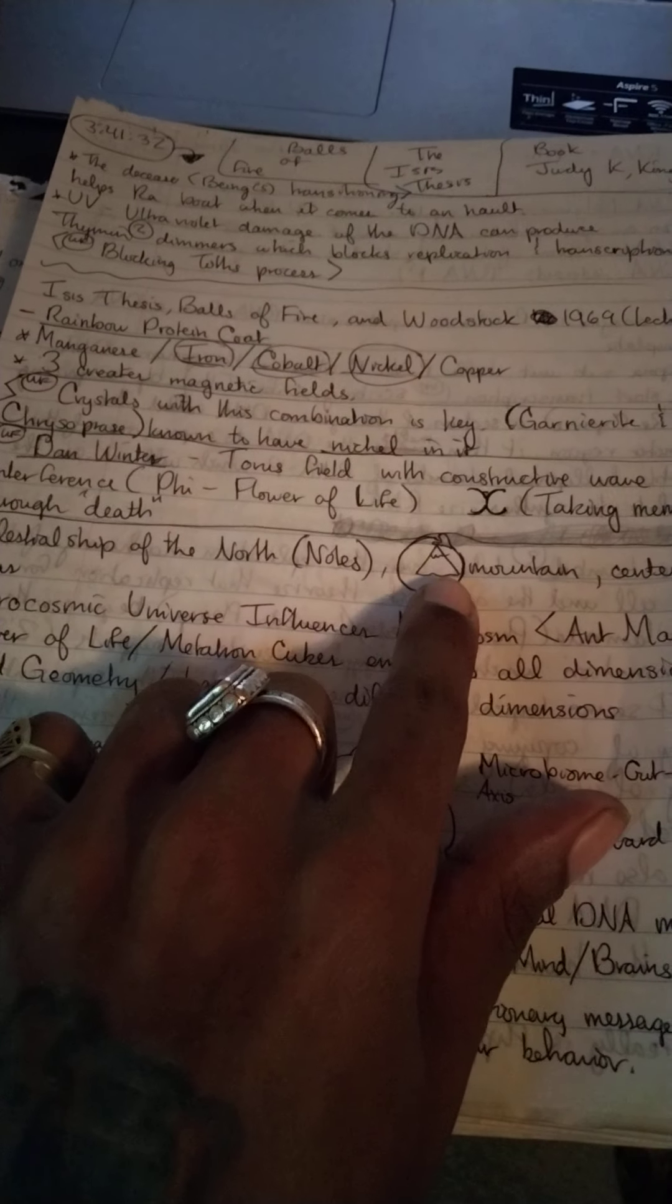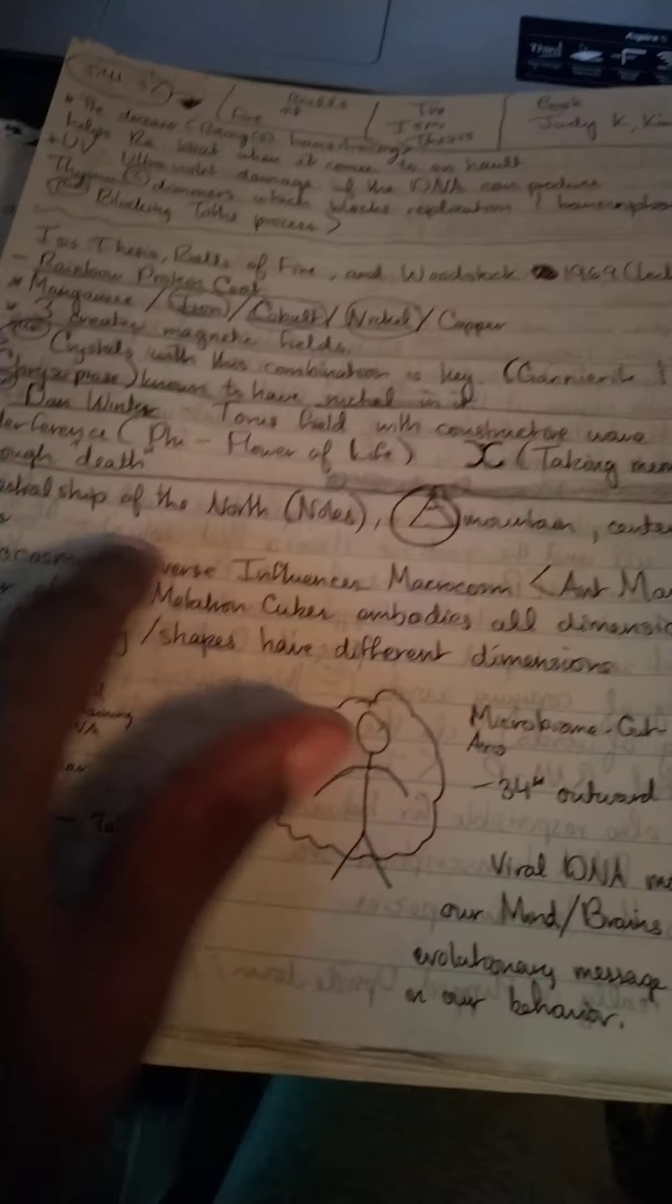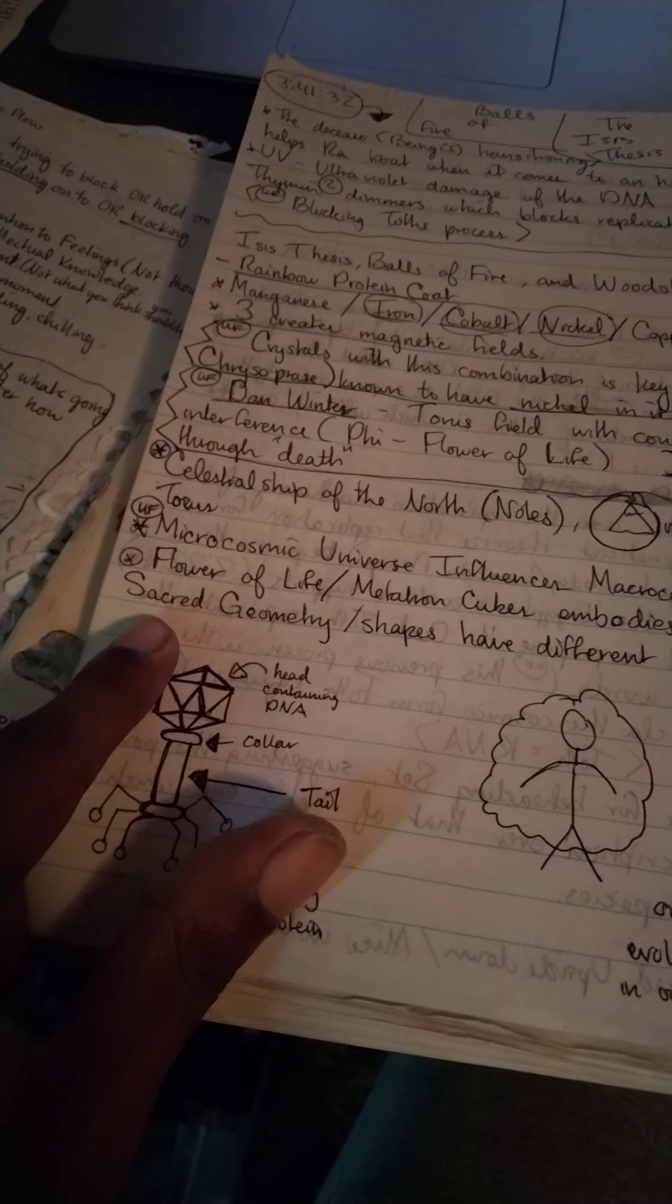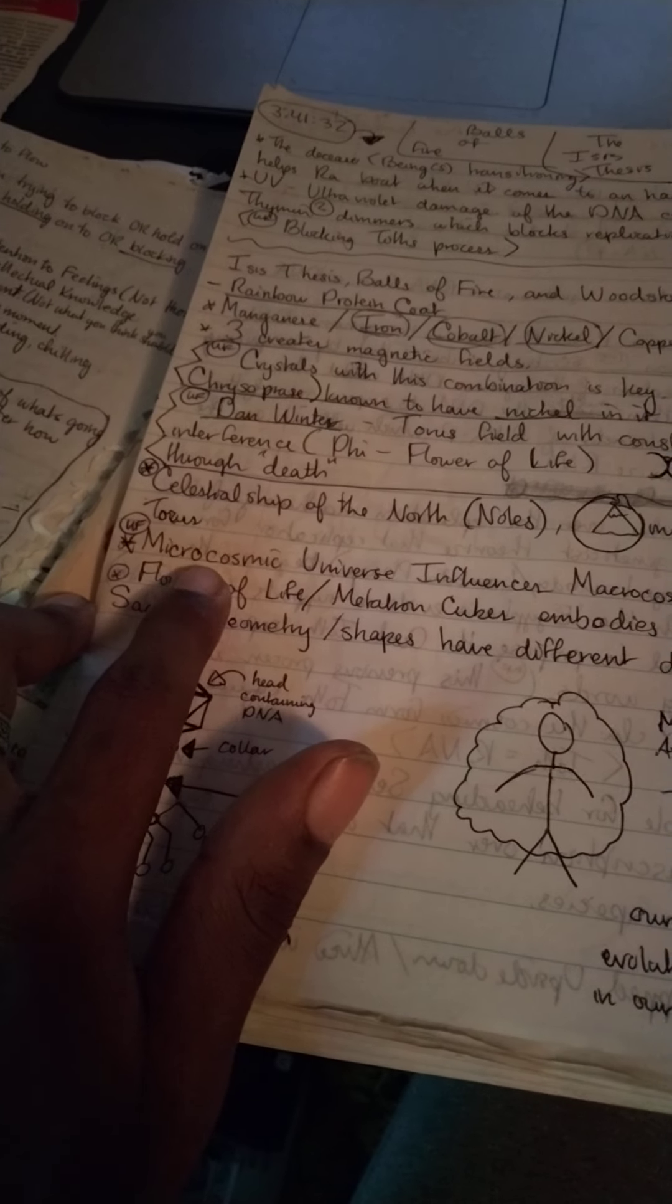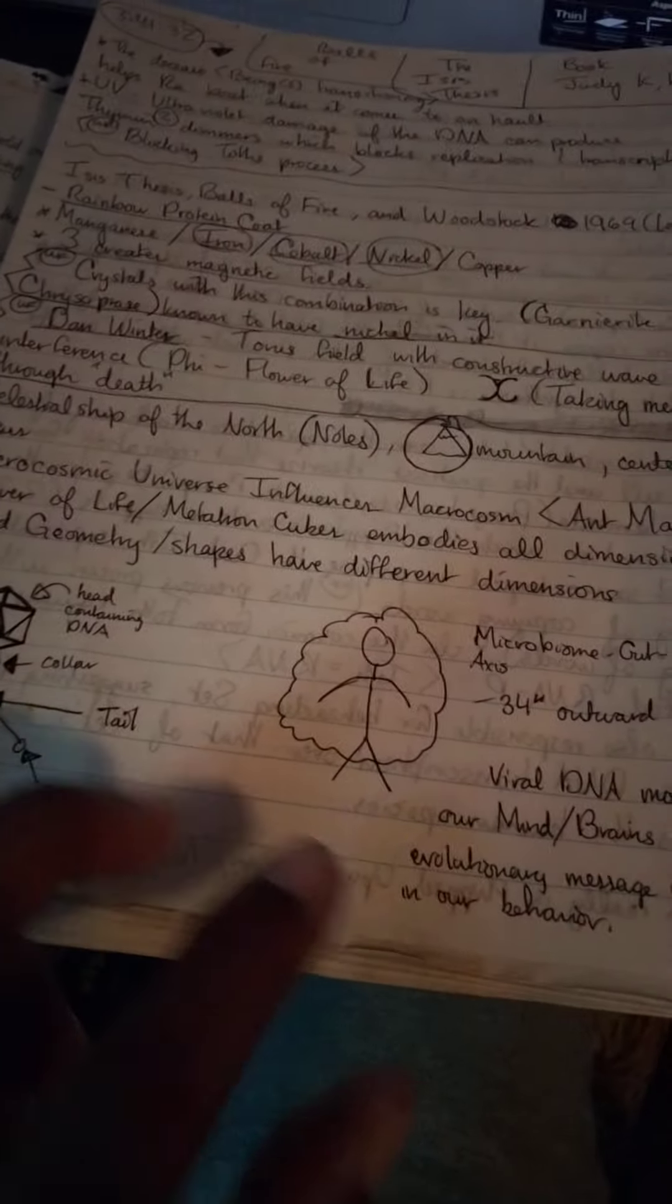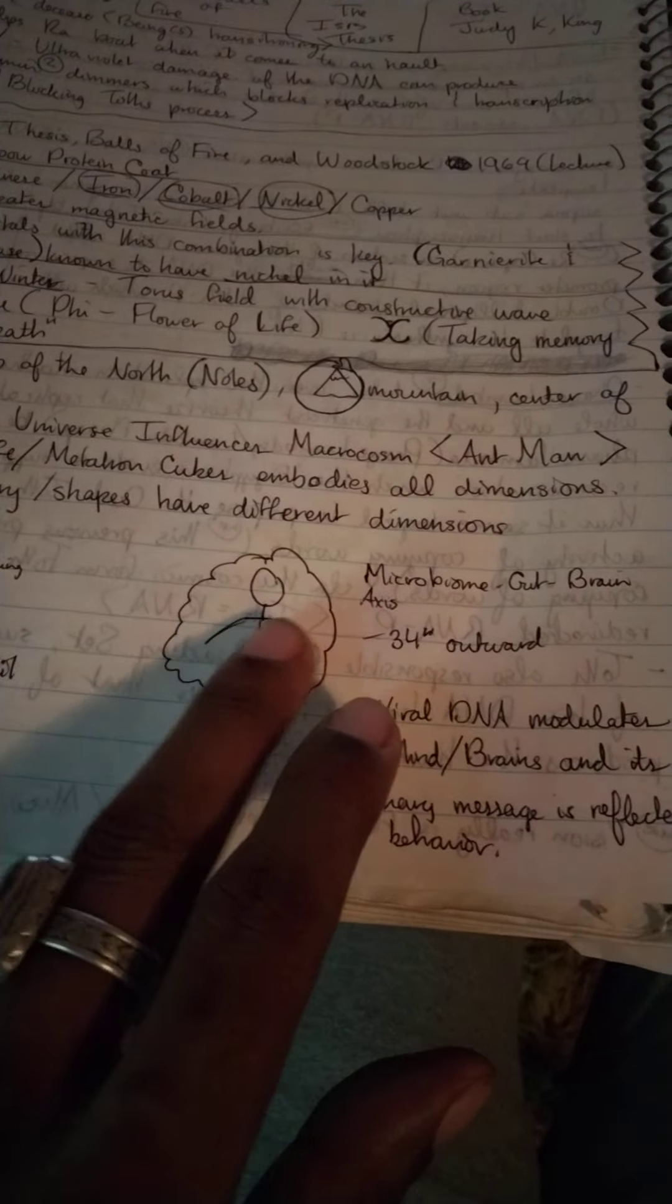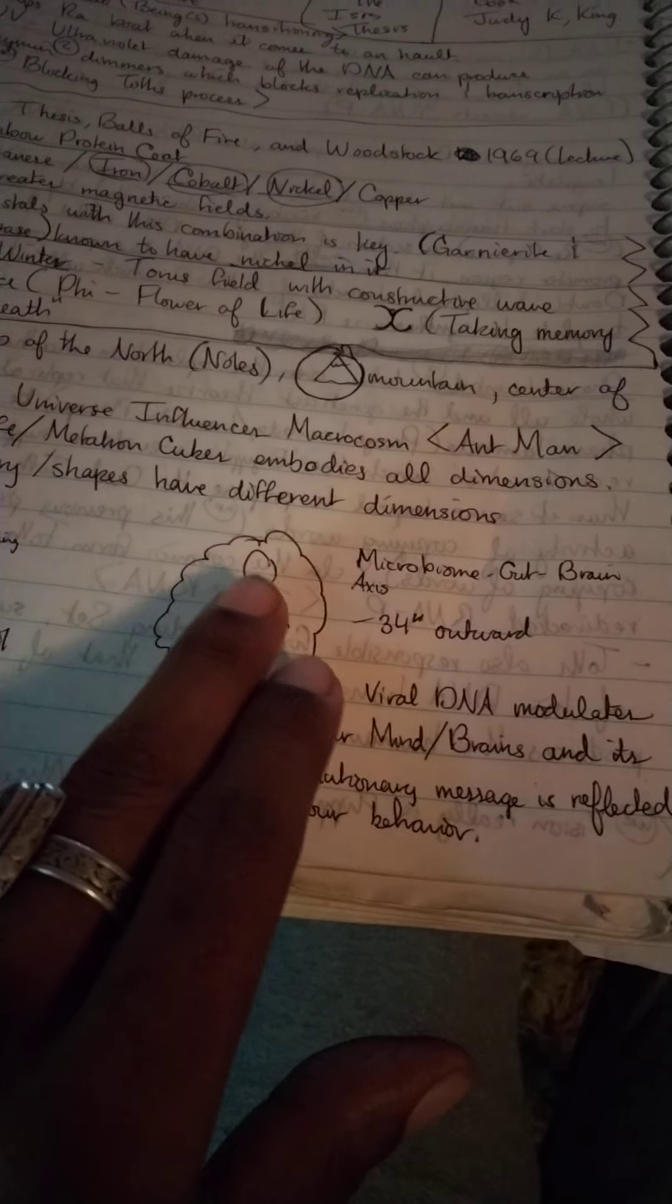A good book explaining this in connection with Judy K. King's lecture is The Celestial Ship of the North by Valentino Stratton, talking about the mountain symbology and how the microcosmic universe influences the macrocosm, like Ant-Man. With the phage lambda and the microbiome, our gut brain, we got a brain in our gut that creates a little auric field from our stomach area.